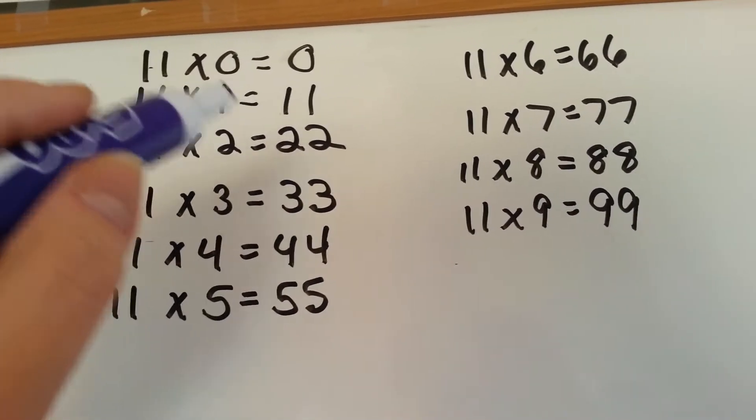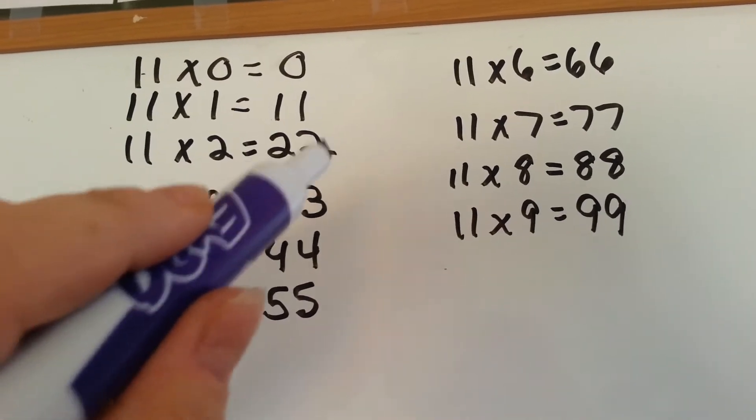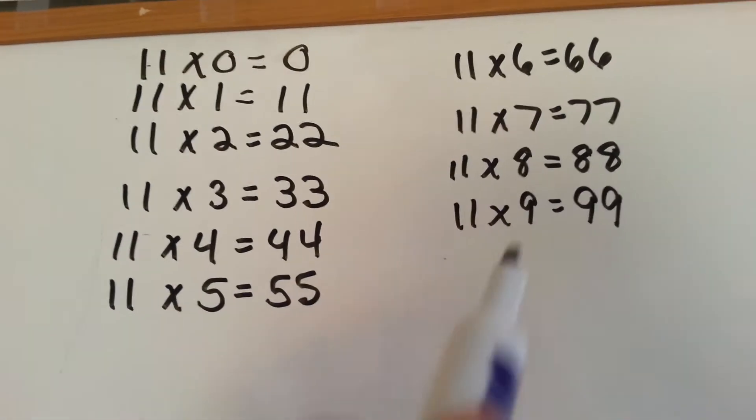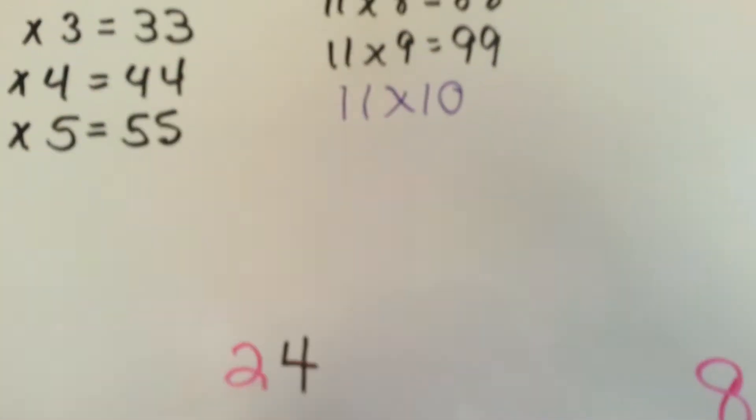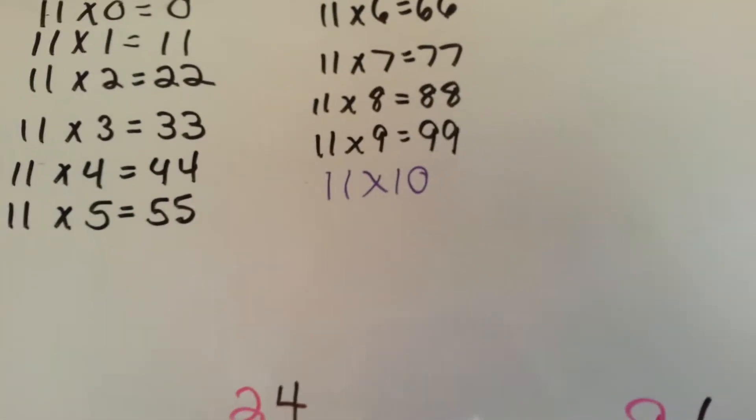So 1 times 11 becomes a 1 and a 1. 11 times 2 becomes a 2 and a 2. See how it doubles? When you get to 11 times 10, I have a trick for you, and I'll show you that in a minute.